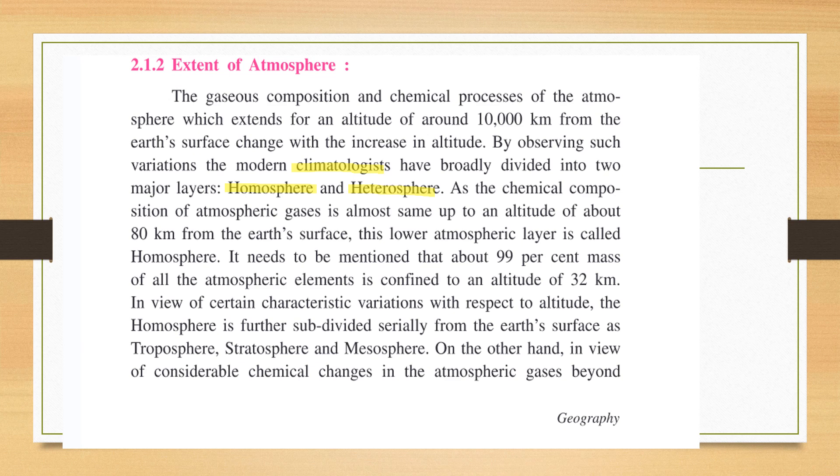Climatologists have observed variations in the atmosphere and they divided it into two major layers. First is Homosphere and next is Heterosphere. So let me draw a diagram. This is the beautiful blue earth. And we already know about atmosphere. Let us depict atmosphere with orange color.